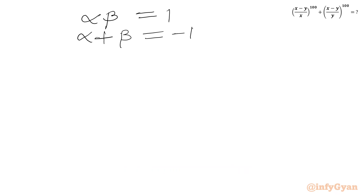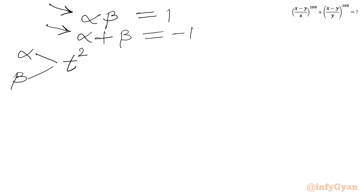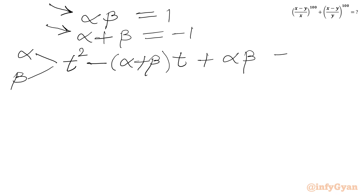If we think about a quadratic equation whose roots are alpha and beta, using Vieta's formulas, the equation is t squared minus alpha plus beta times t plus alpha times beta equals 0. Applying both values — alpha plus beta equals negative 1 and alpha times beta equals 1 — we get t squared plus t plus 1 equals 0.